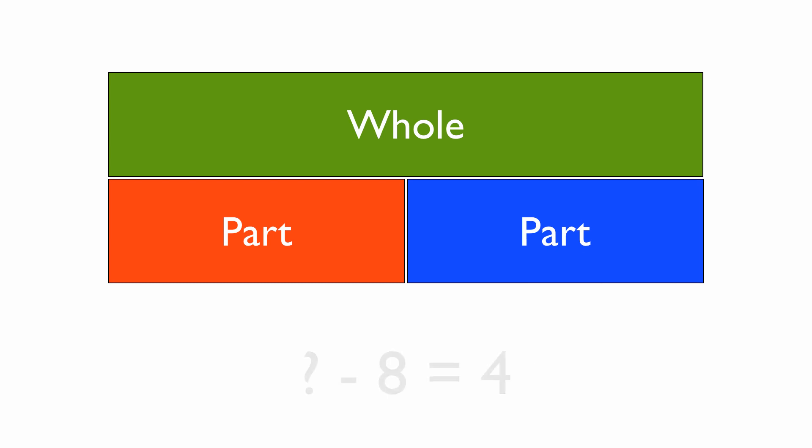And our last example. Here, we don't know our starting point. With something, take away 8 equals 4. Now remember, with take away or subtraction, the whole is always at the start. So on this occasion, the whole is what we're trying to find.